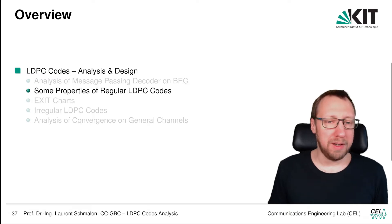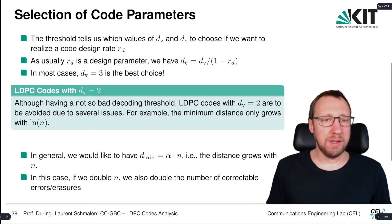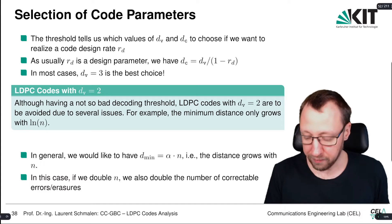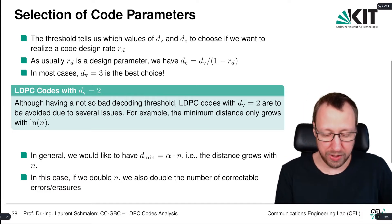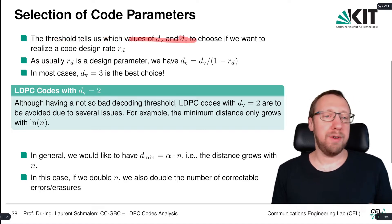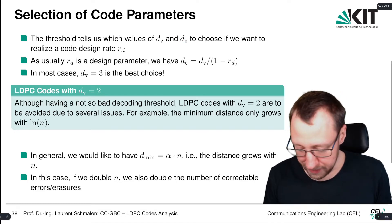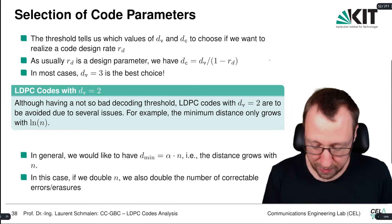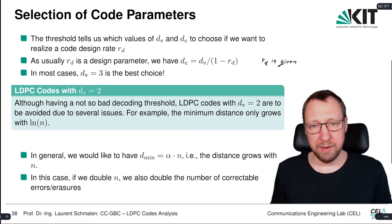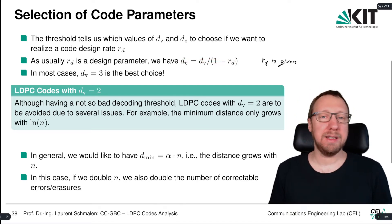We are going to look at a few properties of regular LDPC codes. First we would like to select the code parameters, and for this we use the threshold. The threshold tells us what values of dv and dc we should choose if the code rate is fixed. Usually the design rate is given, and then dc is equal to dv divided by one minus the design rate.